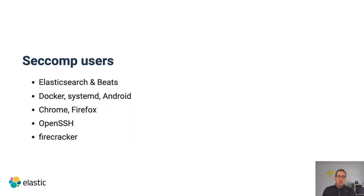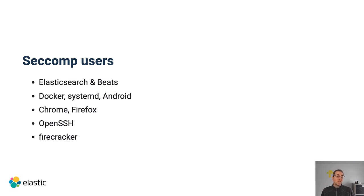There are many SecComp users. Docker uses it to limit the number of available system calls in containers. Systemd allows you to configure policies so certain processes cannot execute certain actions. It's used heavily in Android. Chrome and Firefox use it to limit the scope of what code is able to execute. OpenSSH uses it. The execution environment for AWS Lambda called Firecracker is using it as well. Most of them are rather low-level where you don't really see how it's used — it's just there, and the code itself configures its own security policy.